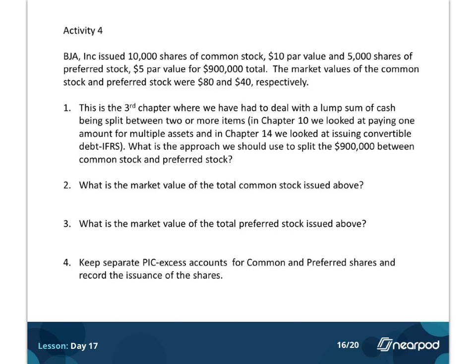All right, so that brings us to the last activity of this set. And here we have a company that has issued two kinds of stock at once. 10,000 shares of common that had a $10 par value and 5,000 shares of preferred stock that had a $5 par value. And it's one big lump sum, $900,000 in total is the cash that we got.